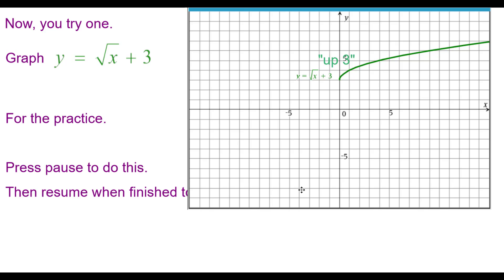Here's your answer: it's the square root function shifted up 1, 2, 3 units — every single point moves up 3.